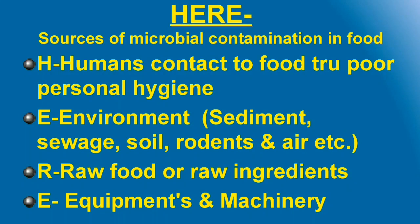HERE is an acronym for the sources of microbiological contamination of food. H stands for Humans, E stands for Environment, R stands for Raw food, raw materials, or raw ingredients, and again E stands for Equipment and machinery used in the food industry.